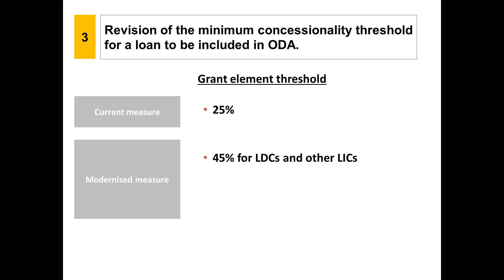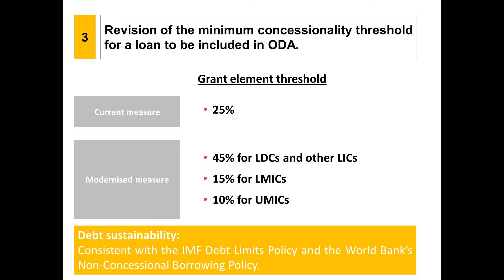The need for concessionality reduces as countries become richer and, consequently, the threshold for LMICs has been set to 15% and that for UMICs to 10%. In addition to the thresholds, and to address debt sustainability concerns, to be reportable as ODA, loans now need to be consistent with the IMF debt limit policy and the World Bank's non-concessional borrowing policy.